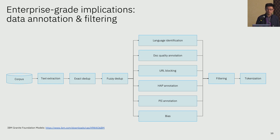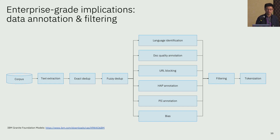And then there's the HAP analysis, which stands for hate, abuse, and profanity. That's the main chunk of analysis we do for each document, and we remove or delete the whole document if necessary to eliminate toxic content. There are also personal sensitive information present in the documents, so we annotate and mask those as well. And then there's the bias in the documents that we analyze and filter accordingly.